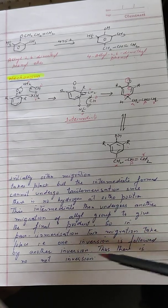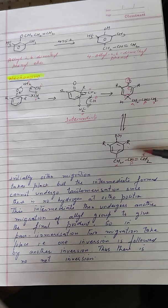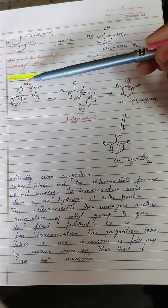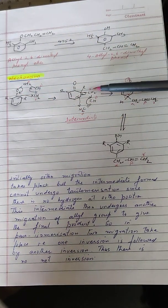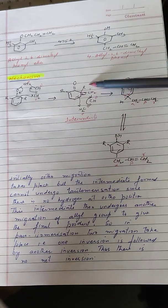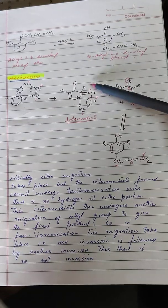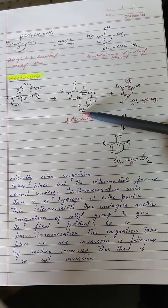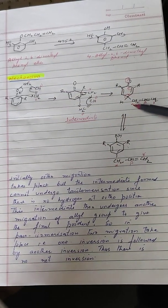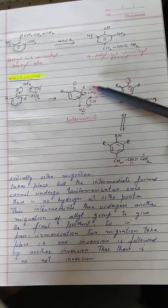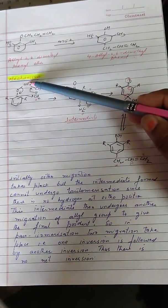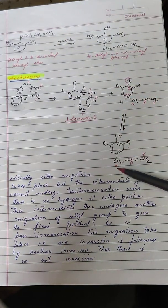One inversion is followed by another inversion, so there is no net inversion. Initially the point of attachment of the allyl group was through the alpha carbon. After the first migration it becomes the gamma carbon; after the second migration it is back to the alpha carbon. So the final product has attachment via alpha carbon, just as the initial compound did — hence no net inversion.